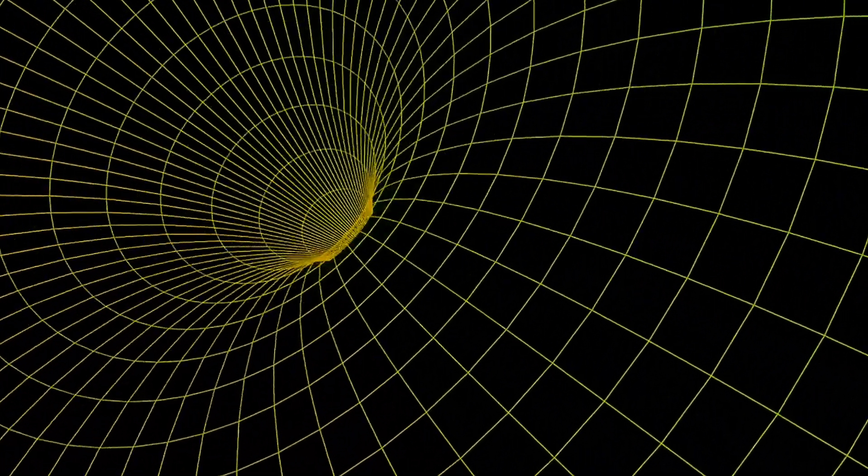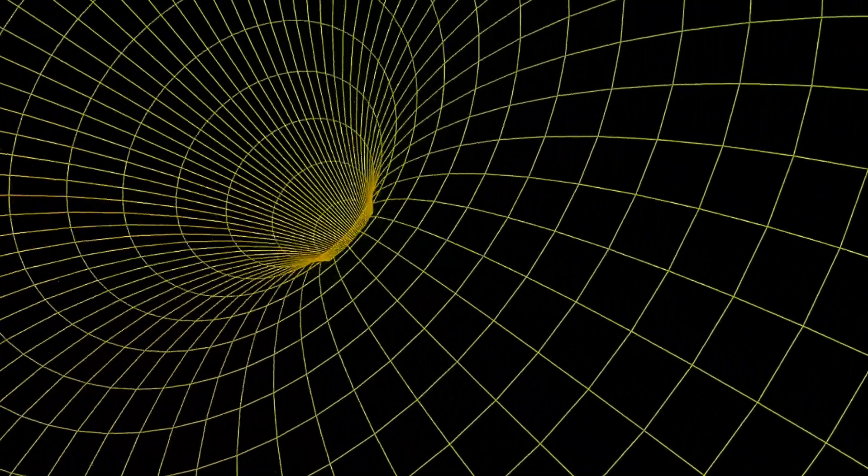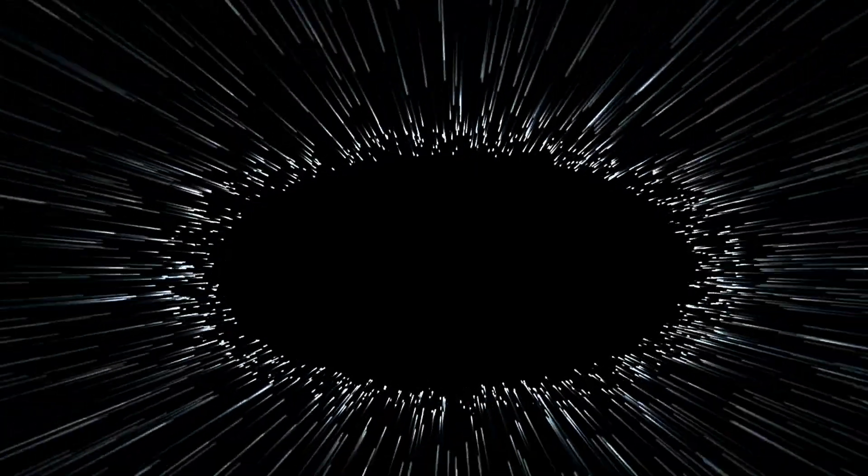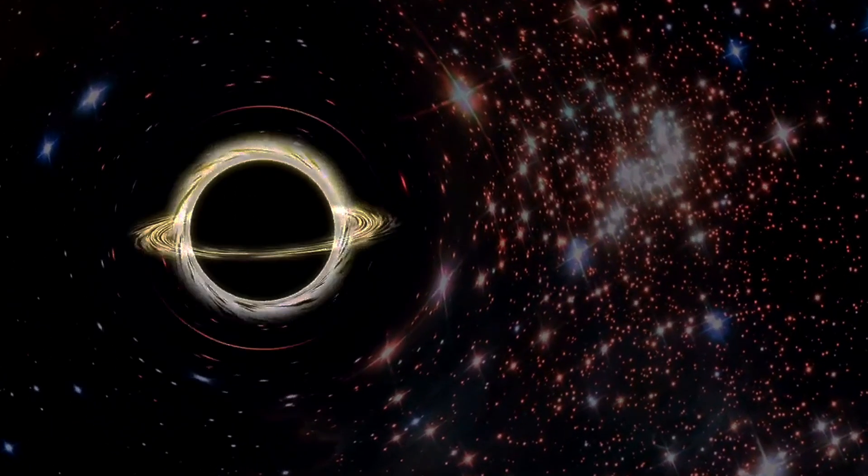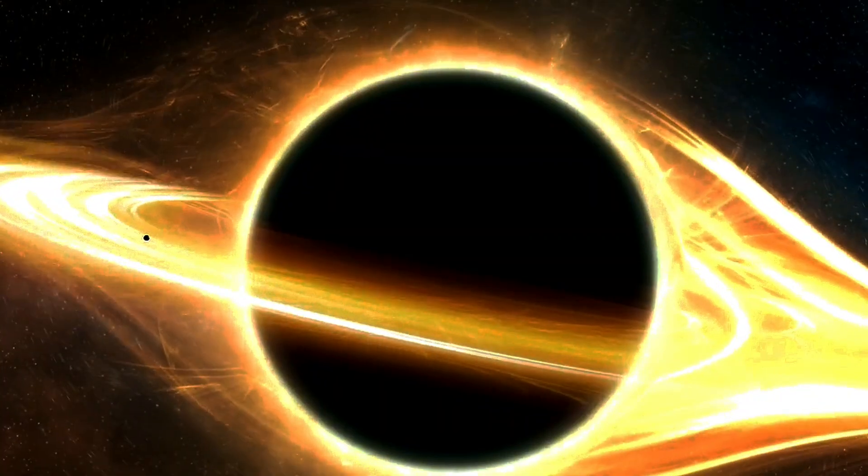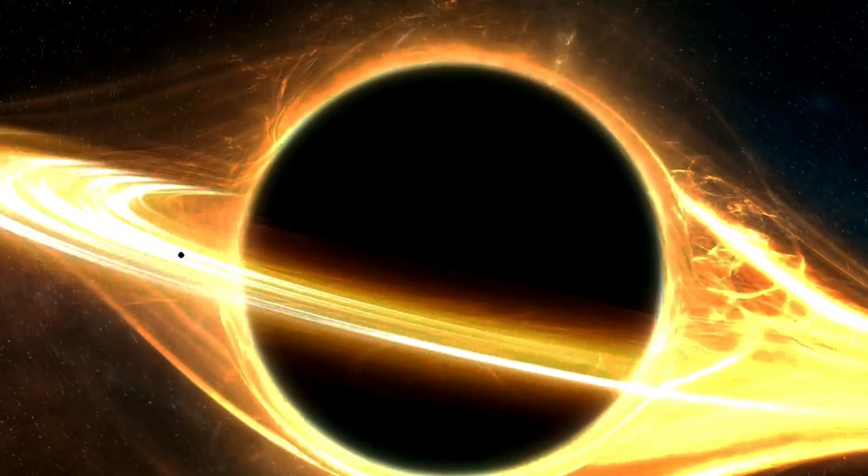Let me explain. You see, in general relativity, a white hole is a hypothetical region of spacetime. Imagine a cosmic object that you can't enter from the outside. But here's the kicker – energy, matter, light and information can escape from it. In this way, it's kind of like the reverse of a black hole where nothing can escape.